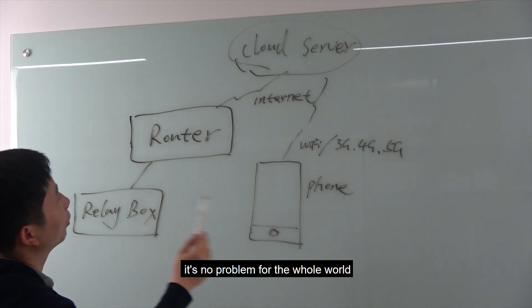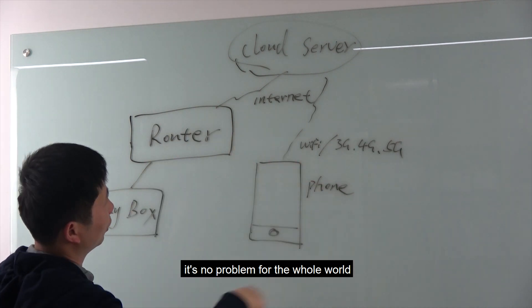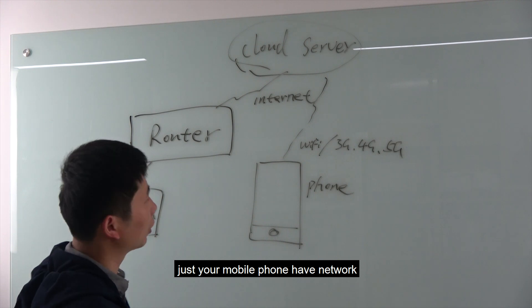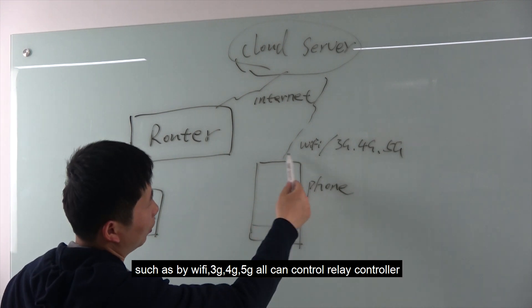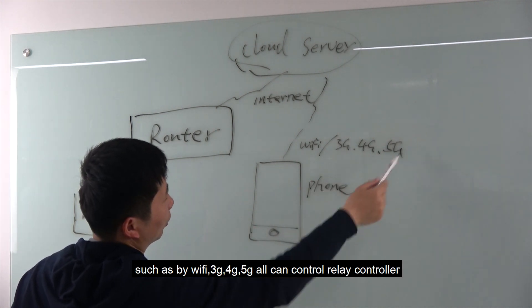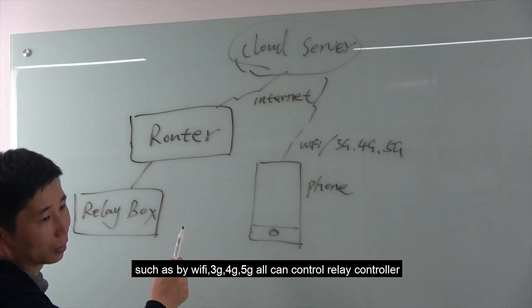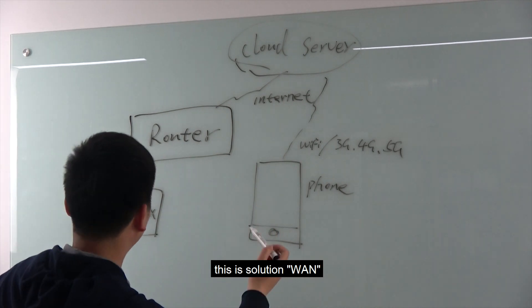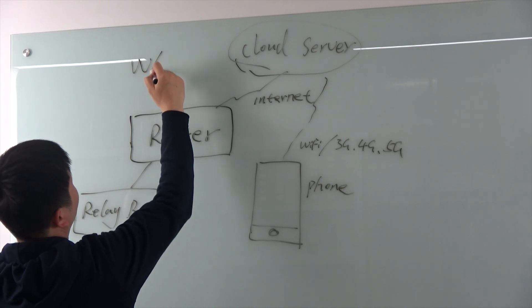It works from anywhere in the world. As long as your mobile phone has a network connection, you can control the relay box. This is the WAN solution.